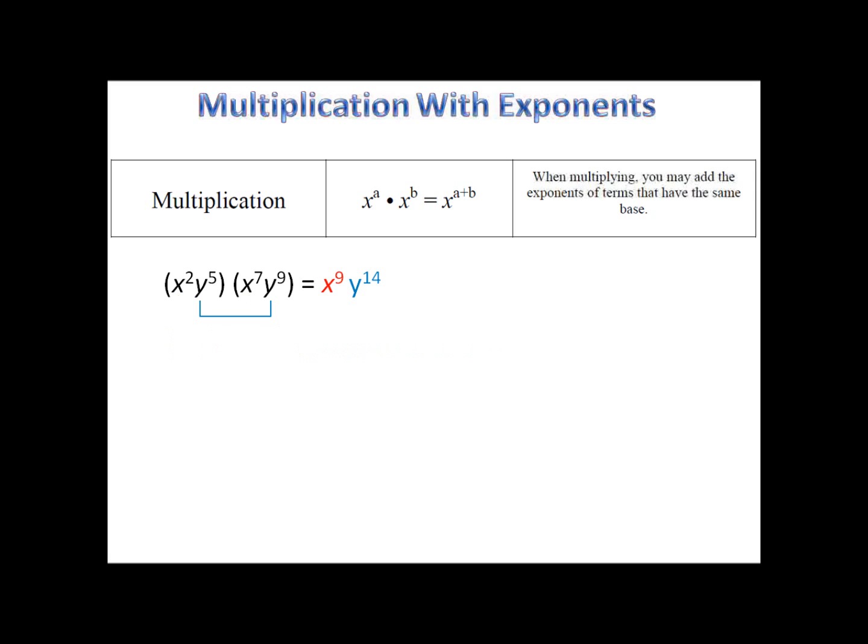Now let's take a look at the y's, y to the fifth and y to the ninth. We know we can just add the exponents together, five plus nine, to get 14. The reason for that is this: our first parentheses has five y's, our second parentheses has nine of them. We add them together, we have 14, which is y to the 14th.